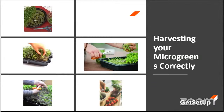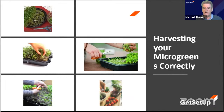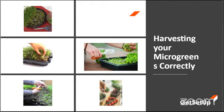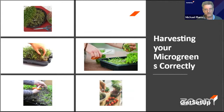Where do you get the seeds? Amazon sells them. You don't need special microgreen seeds — they're ordinary vegetable seeds. You must make sure they are untreated or organic seeds. You can buy them on the internet.